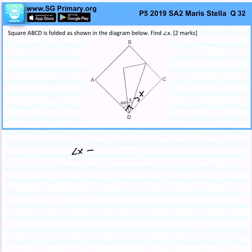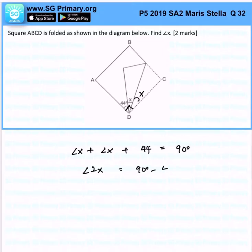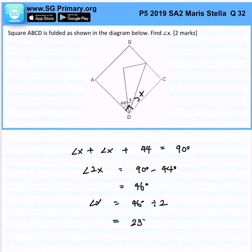So, X plus X plus 44 is going to give us 90 degrees. 2X is 90 degrees minus 44 degrees, which is 46 degrees. All we got to do is take 46 divided by 2, and we will get 23 degrees. That is the answer for this question.